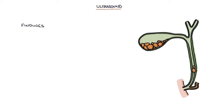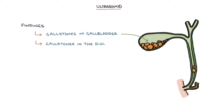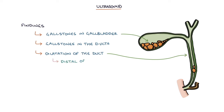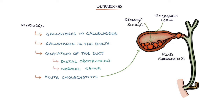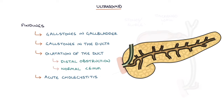An ultrasound scan can be helpful in identifying gallstones in the gallbladder, gallstones in the ducts, and dilatation of the bile duct — which may be caused by a distal obstruction causing the proximal bile duct to swell up. The normal diameter of the bile duct is less than 6 mm. It can also identify acute cholecystitis, where it may be possible to see a thickened gallbladder wall, stones or sludge in the gallbladder, and fluid surrounding the gallbladder. It can also be used to assess the pancreas and the pancreatic duct.